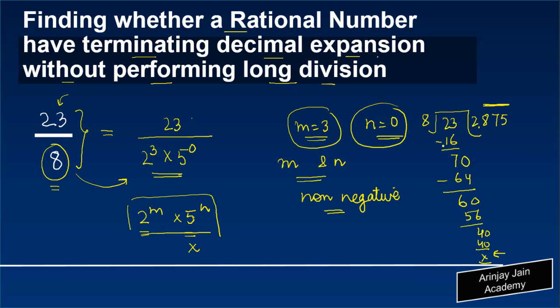So what we have is a terminating decimal expansion, and instead of doing this long division method we could have found out this by simply putting the denominator in the form 2 to the power m into 5 to the power n. If it can be expressed such that m and n are non-negative integers, that means this rational number has a terminating decimal expansion.